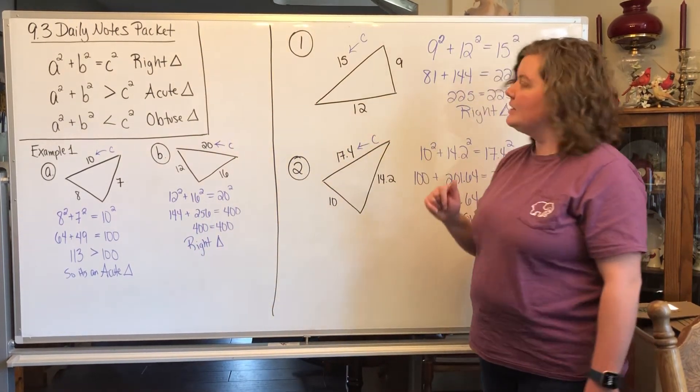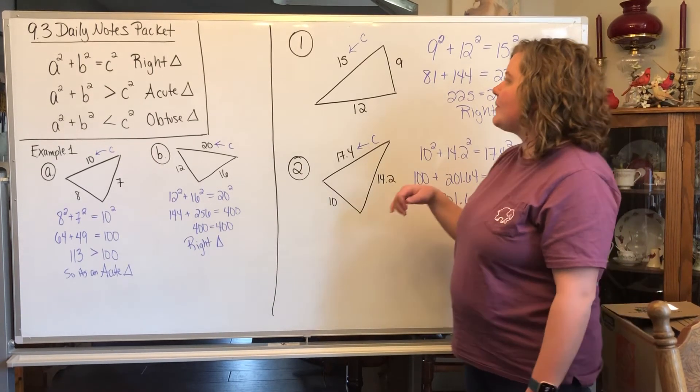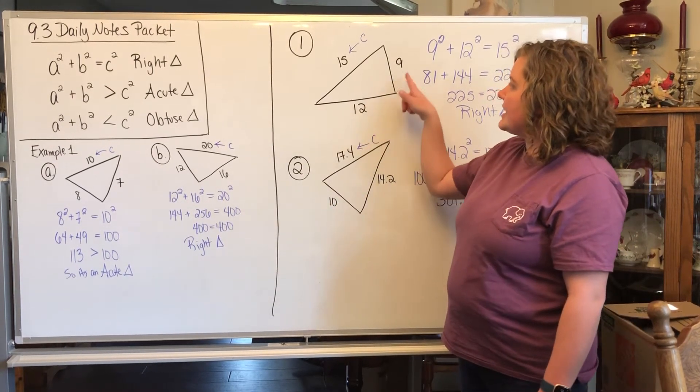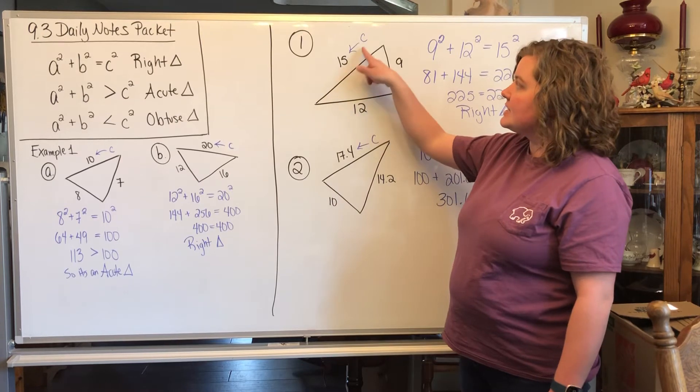So on page 2, there are some problems that go with this. The first problem, you've got a triangle with sides 9, 12, 15, so 15's going to be your c.